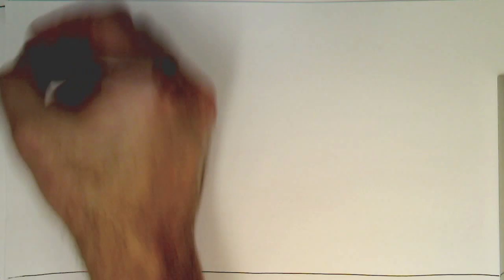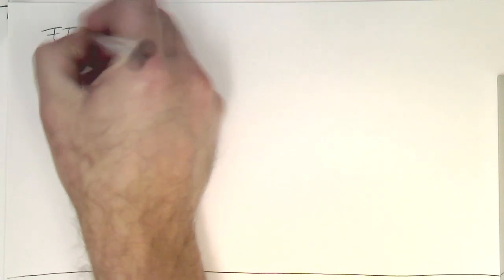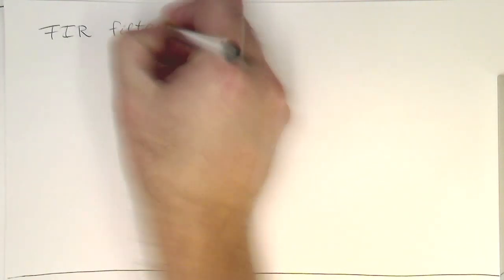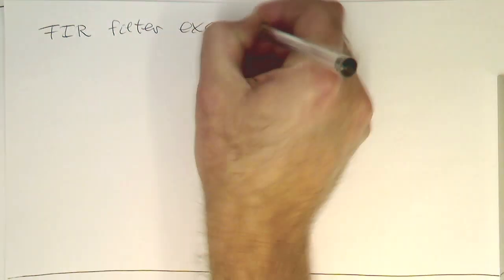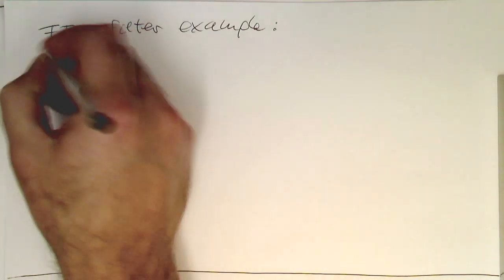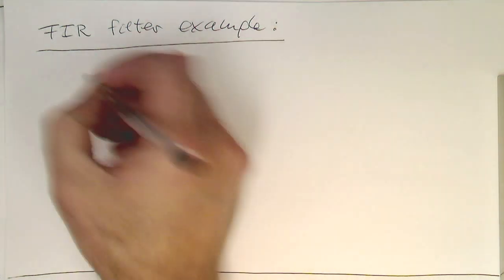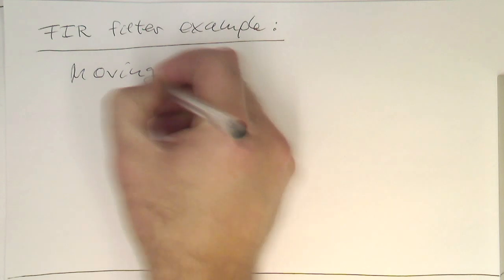Let's do the next step: an FIR filter example, just to get an idea how this whole thing works. The example we'll use is a moving average.